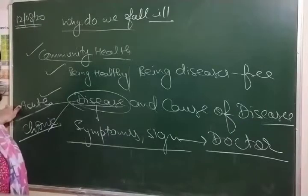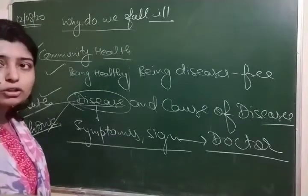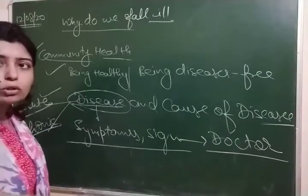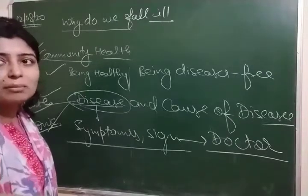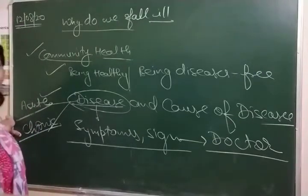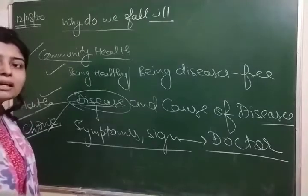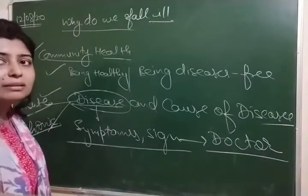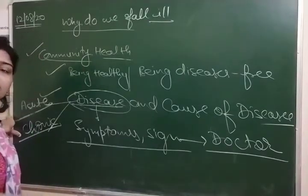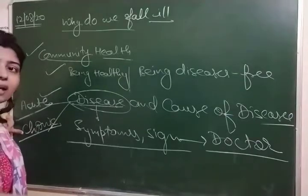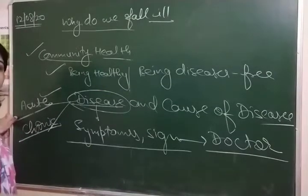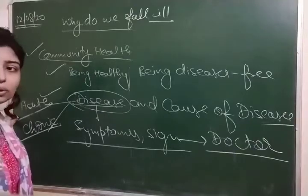Acute disease lasts only for a short period. It affects the body suddenly. Chronic disease does not show quick effects on the body and does not disappear quickly from antibiotics. We call long-period disease chronic disease and short-period disease acute disease.